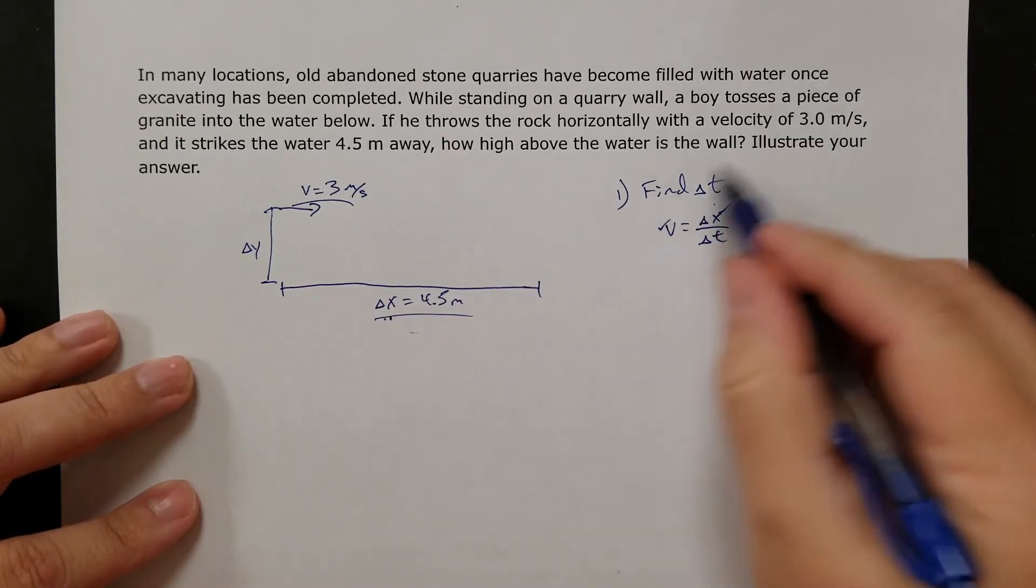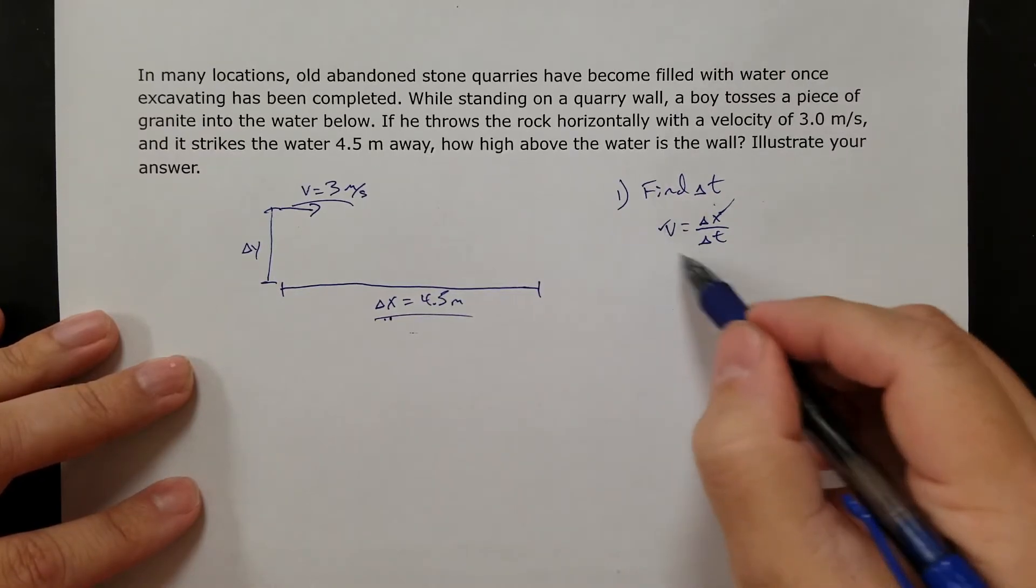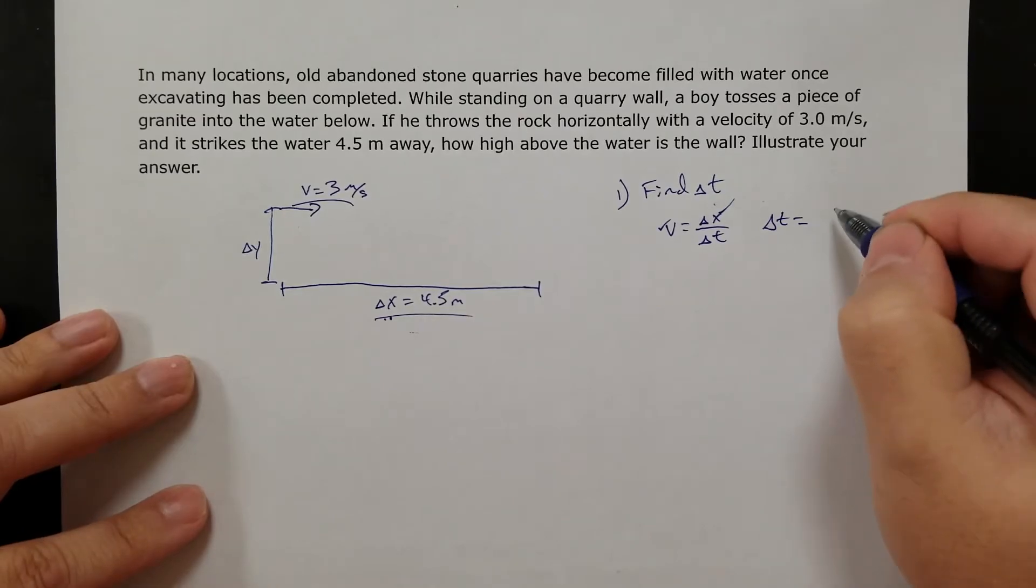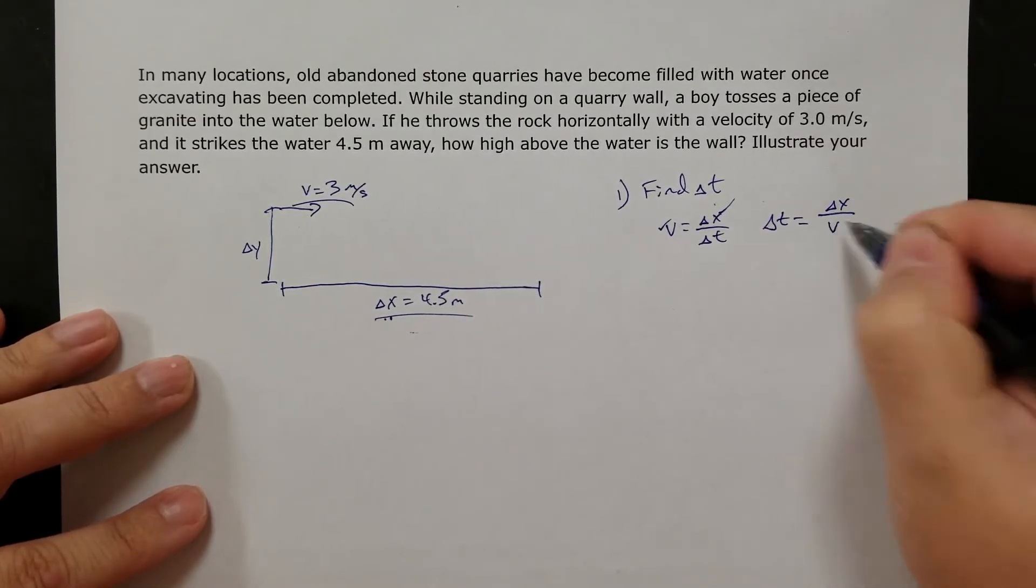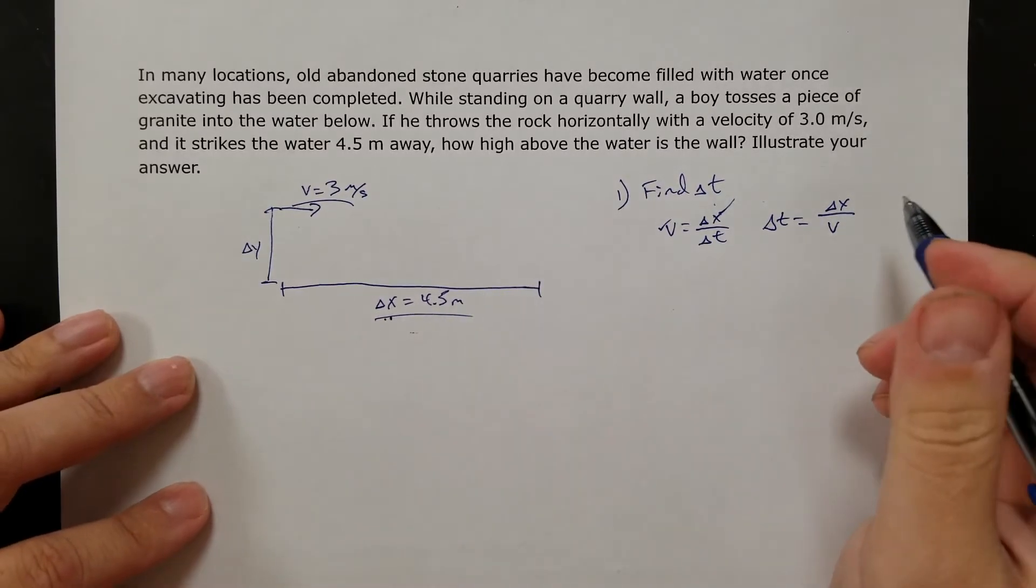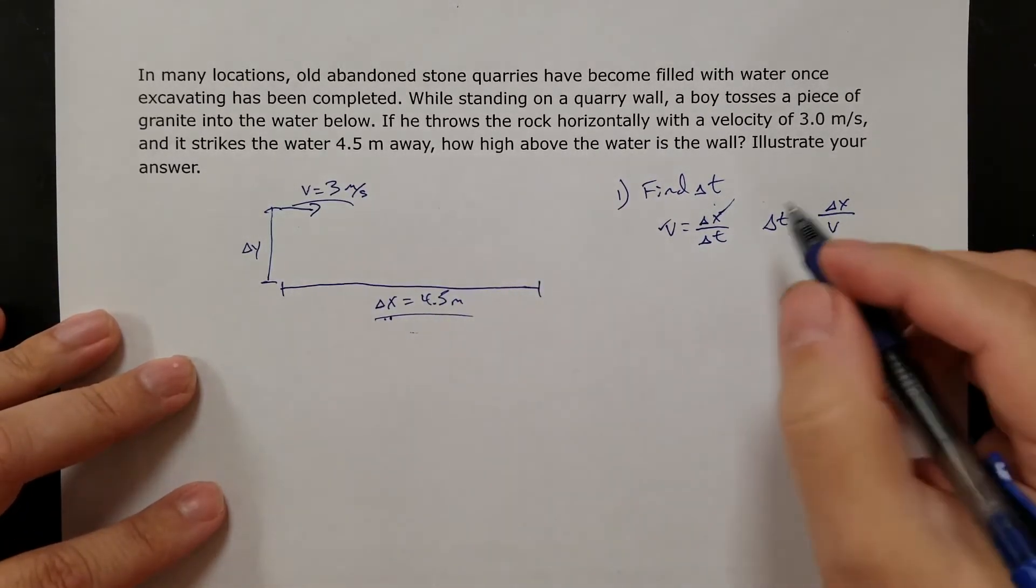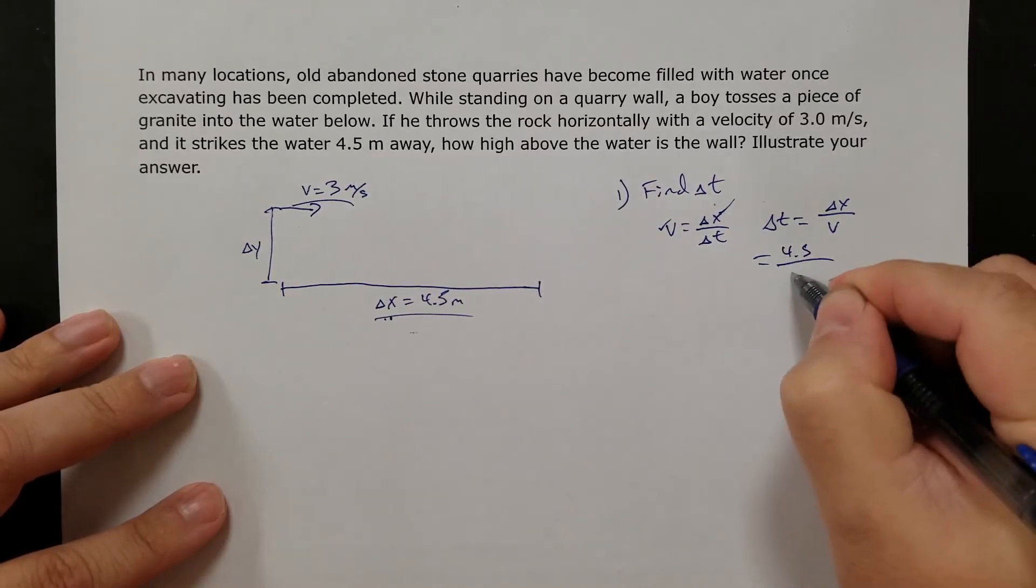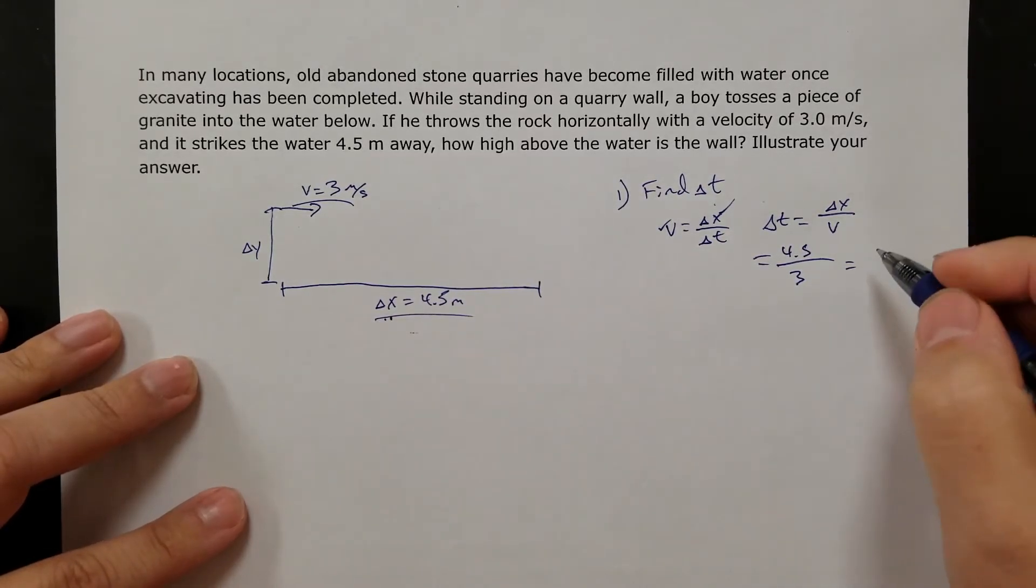So doing algebra, remember, if you're ever solving for the denominator, I can just swap those two. So if I algebra this, I get delta t is delta x over v. And I know this, and so now I can get time. It's just a different way to get time, based on me knowing both of those things. So delta x is 4.5, velocity is 3. So if I do that, I get a delta t of 1.5 seconds.